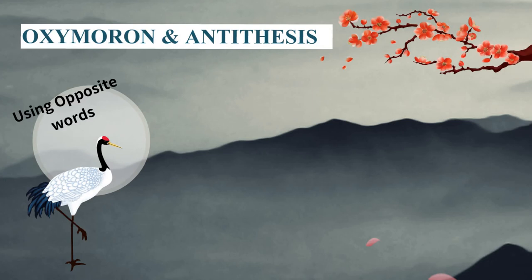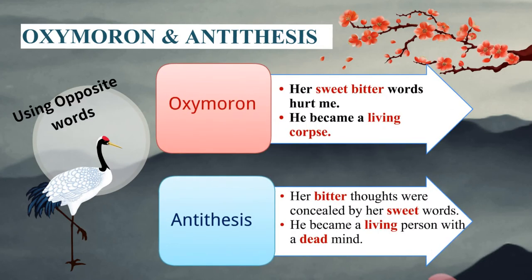In oxymoron, 'her sweet bitter words hurt me' and 'he became a living corpse.' Both opposing words — sweet and bitter in the first sentence — are used together in close proximity to each other, in conjunction. In the second sentence, living and corpse, the two opposing ideas, are also used together in close proximity. Importantly, sweet and bitter are used for one entity — words — and living corpse is used for one entity — he.